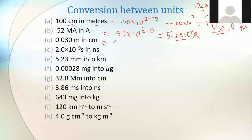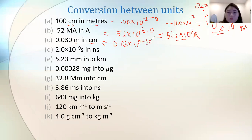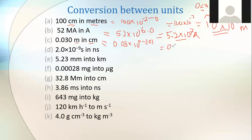Next conversion: 0.03 meters to centimeters. The method: 10 to the power of (meter is zero, minus centi is negative two) = 10². So 0.03 times 10² = 3 centimeters, or 3 times 10⁰. The easier way is to just shift the decimal two places, but I'm showing the technique so it can be applied universally.